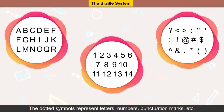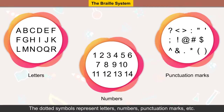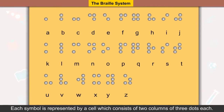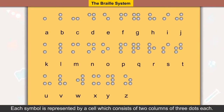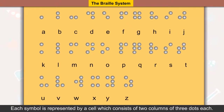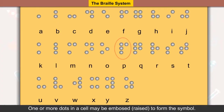The dotted symbols represent letters, numbers, and punctuation marks. There are 63 symbols or characters in braille. Each symbol is represented by a cell which consists of two columns of three dots each, and one or more dots in a cell may be embossed or raised to form the symbol.